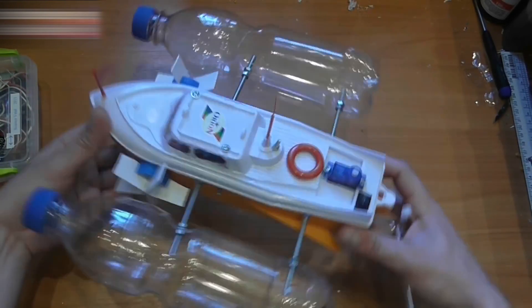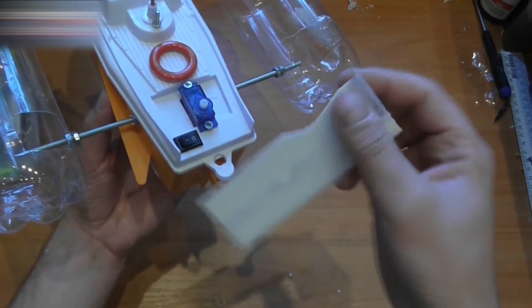The rotation system works like this. The servo will rotate the blade. This will make the boat turn.